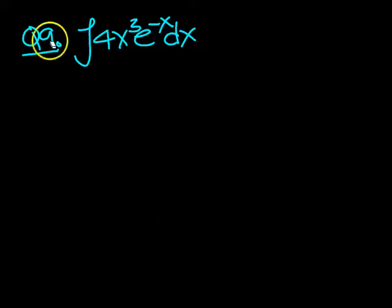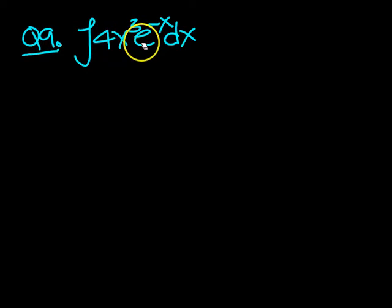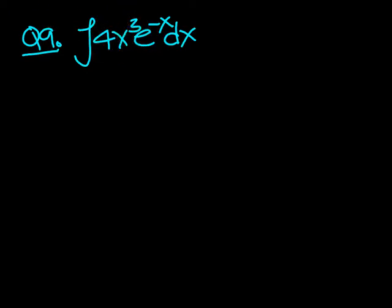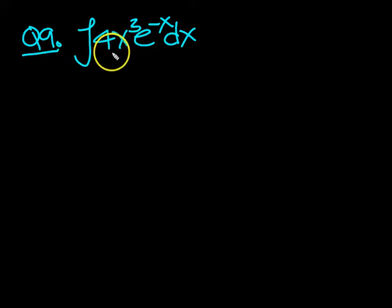Okay guys, let's have a go at this one then, question 9. We've got the integral of 4x cubed e to the minus x. Looks like we're going to have to do three steps here. Step down, step down, and step down to ground level and put it all together.